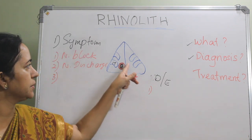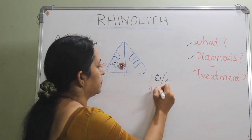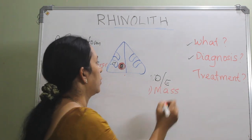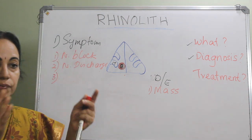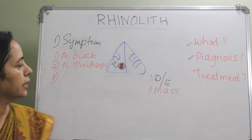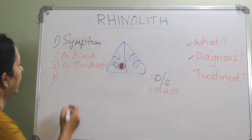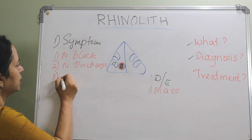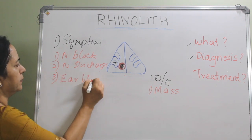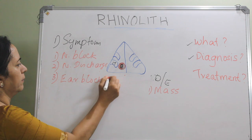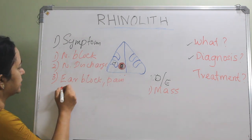The usual site of a rhinolith is between the septum and the inferior turbinate — a brownish mass in the nose. If it is very large, it can press on the Eustachian tube area, causing ear block and ear pain.